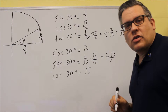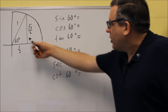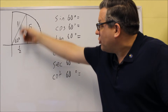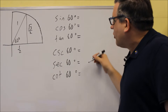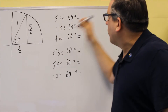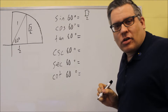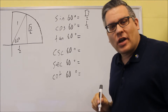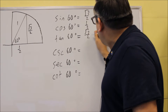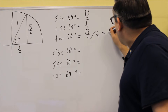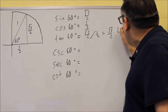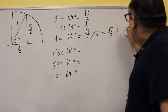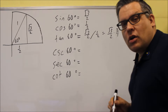One more to look at — 60 degrees. At 60 degrees, the x value is 1 half and the y value is square root of 3 over 2. So sine 60 is square root of 3 over 2, and cosine 60 is 1 half. Tangent 60 is the y value over the x value: square root of 3 over 2 divided by 1 half, which is the same as multiplying by 2 over 1. The 2's cancel and we get square root of 3.